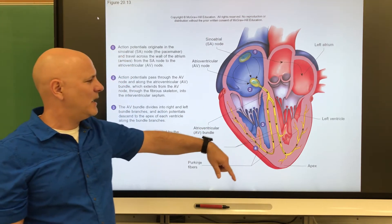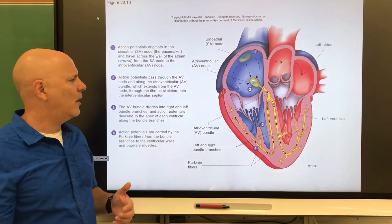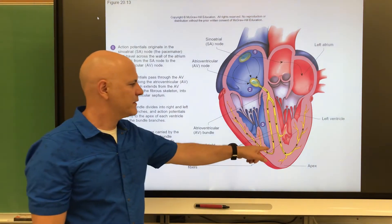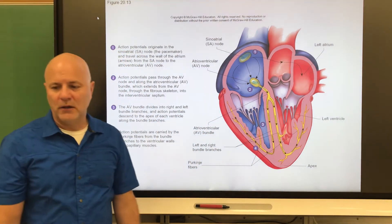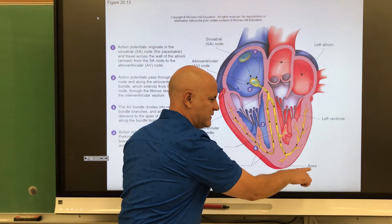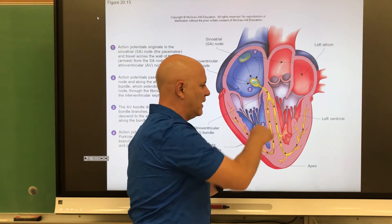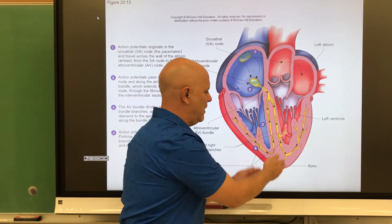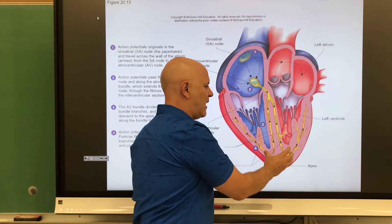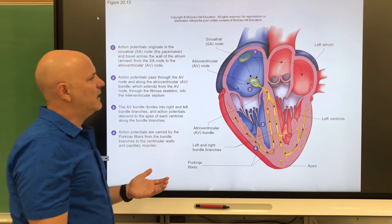The impulse travels down the AV bundle, splits in the interventricular septum, and is directed toward the apex of the heart. From there, the Purkinje fibers conduct impulses from the AV bundle into the ventricular walls. Contraction does not occur along the conduction pathway itself — it begins at the apex and moves upward. This upward direction of contraction helps push blood up and out of the heart.